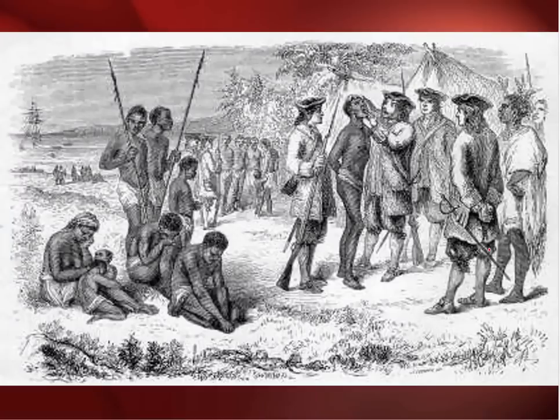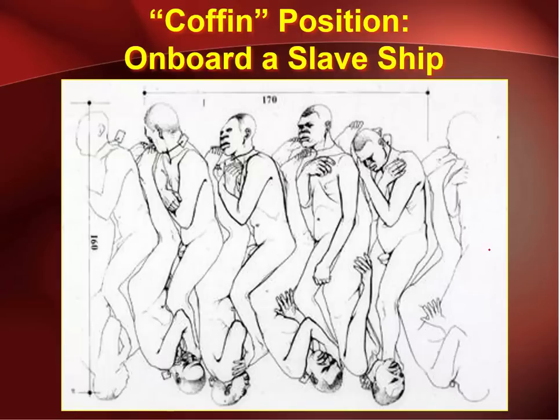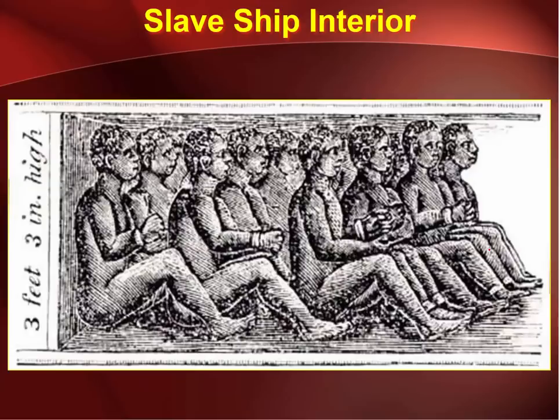Here you can see captives being inspected in order to be bought as slaves — this man is inspecting the other man's teeth. This is a depiction of what a slave ship plan looked like, because the goal of the traders was to get as many people as possible crammed onto these ships — that's where the money was. They laid them in what's called the coffin style, in decks from head to foot. This is considered the coffin position on board a slave ship, so they could pack in as many people as possible.